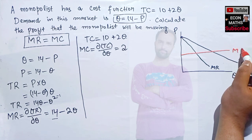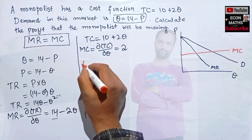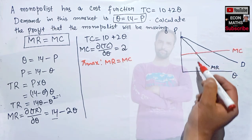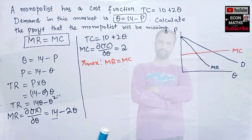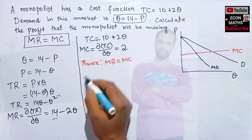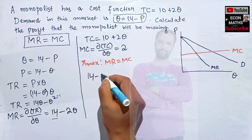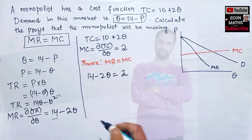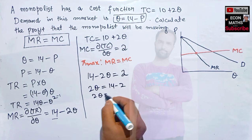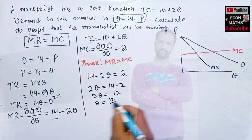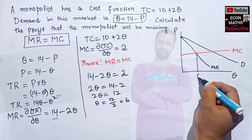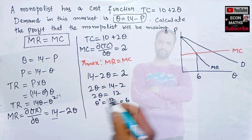Profit maximization requires MR = MC, so marginal revenue and marginal cost intersect at a point that gives the profit-maximizing output. Equating: 14 - 2Q = 2. Transposing: 2Q = 14 - 2 = 12, so Q = 6. The profit-maximizing level of output is Q* = 6.